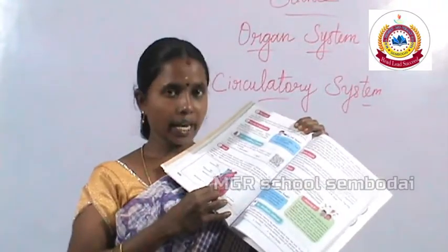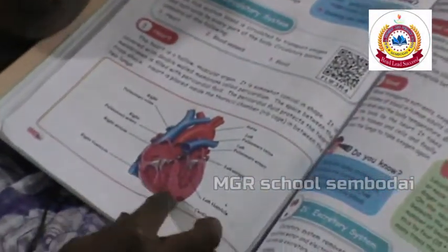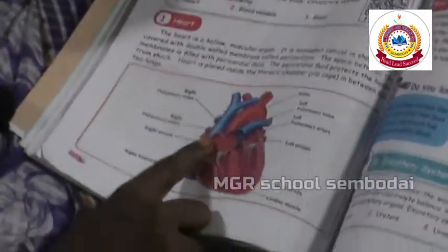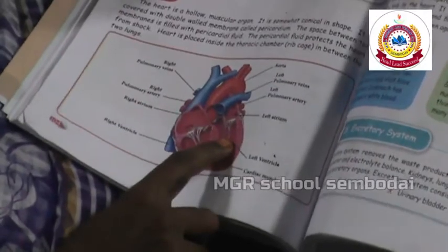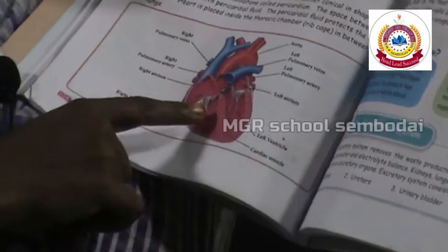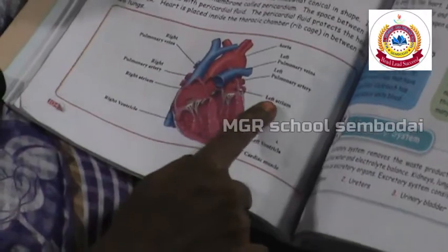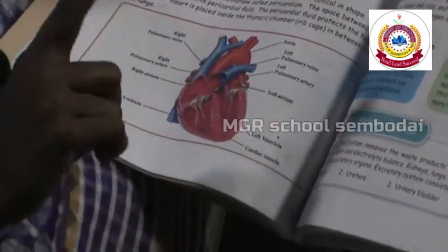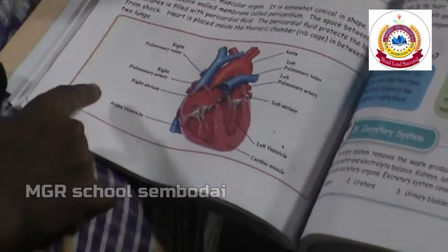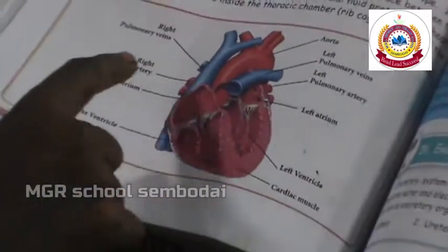Look at the diagram. There are four chambers — one, two, three, four. The heart is divided into four chambers. The two upper chambers are called the atria: right atrium and left atrium. The two lower chambers are called the ventricles: right ventricle and left ventricle.